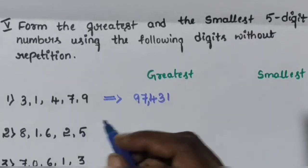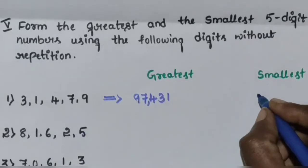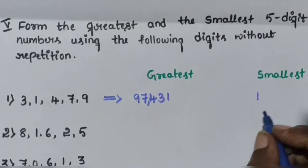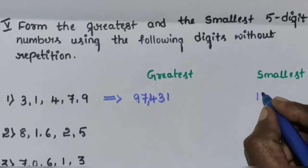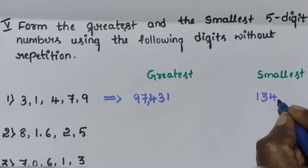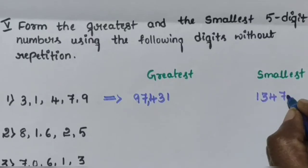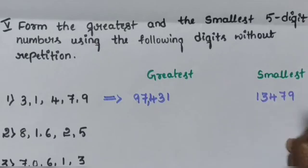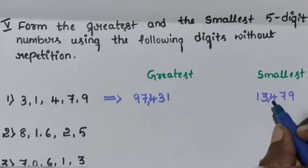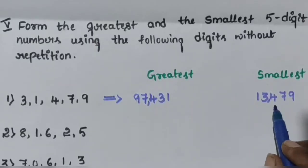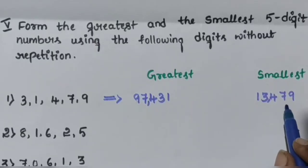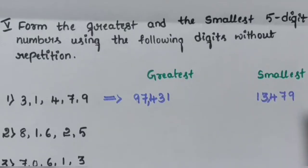Next, write the smallest number by arranging in ascending order: 1, 3, 4, 7, 9. So 13,479 is the smallest 5-digit number.